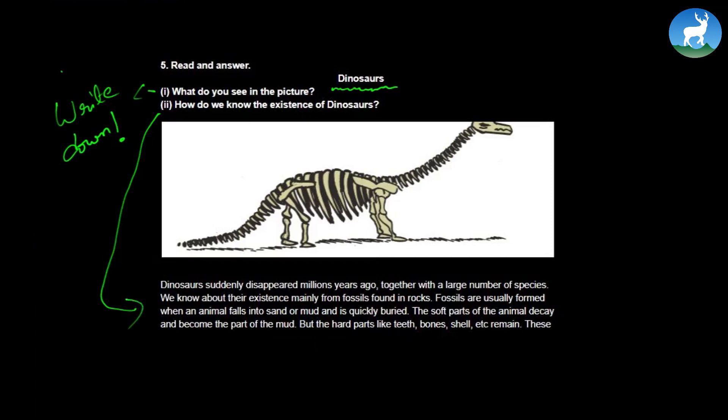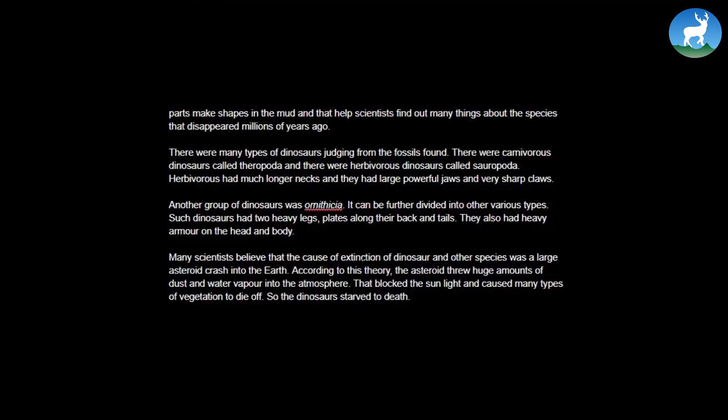Dinosaurs suddenly disappeared millions of years ago, together with large number of species. We know about their existence mainly from fossils found in rocks. Fossils are usually formed when an animal falls into sand or mud and is quickly buried. The soft parts of the animal decay and become the part of the mud, but the hard parts like teeth, bones, shell, etc. remain. These parts make shapes in the mud, and that helps scientists find out many things about the species that disappeared millions of years ago.